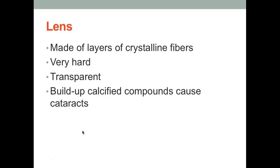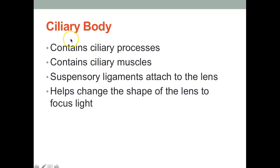The lens is made of layers of crystalline fibers. It's very hard and transparent — if you've ever dissected a cow eyeball you'll see a marble-like structure. If there is a buildup of calcified compounds it causes a cataract. The ciliary body consists of muscles that, by relaxing and contracting, help change the shape of the lens.